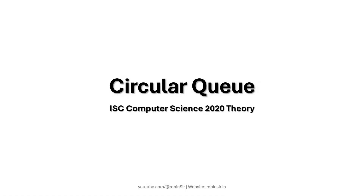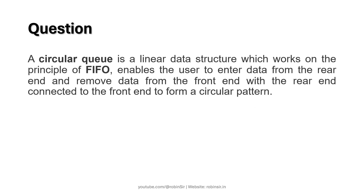Hello and welcome. In today's class we'll be looking at the circular queue problem that appeared in ISC computer science 2020 theory paper. According to the question, a circular queue is a linear data structure which works on the principle of FIFO — first in, first out — enabling the user to enter data from the rear end and remove data from the front end, with the rear end connected to the front end to form a circular pattern.